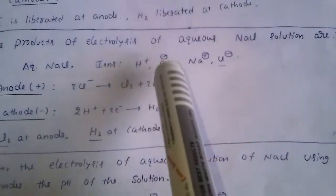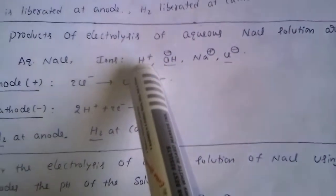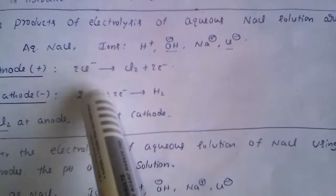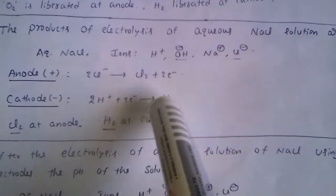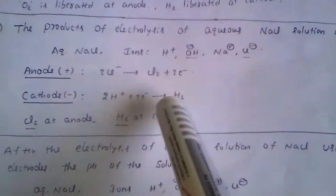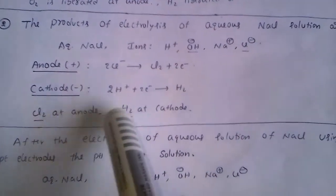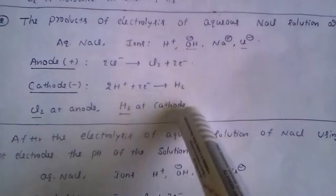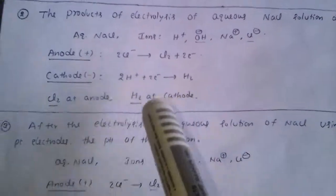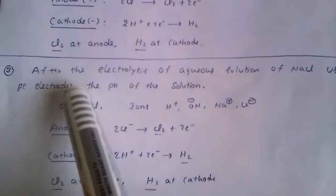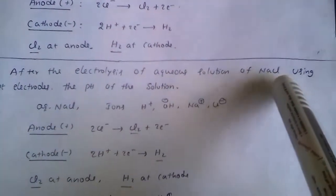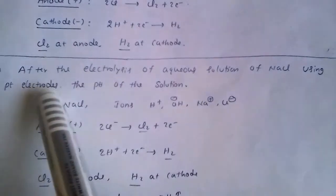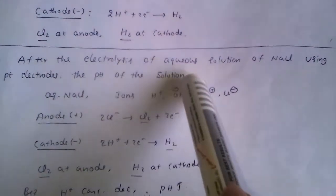Among the cations H⁺ and Na⁺, H⁺ has less discharge potential, so H⁺ discharges first: 2H⁺ + 2e⁻ gives rise to H₂. Therefore, Cl₂ is liberated at the anode and hydrogen gas is liberated at the cathode in the electrolysis of aqueous NaCl using platinum electrodes.